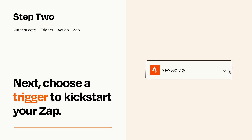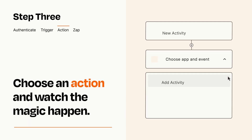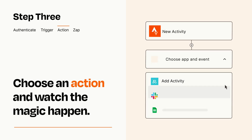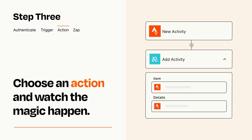This last part is where the magic happens. Choose the action you want to happen in your target app. You'll see a bunch of fields where you can specify the details of your Zap. You can type free form text or pull data in from your trigger step as needed.